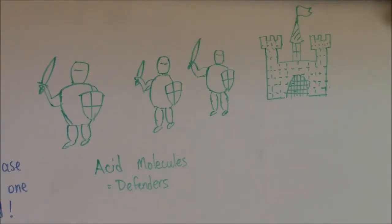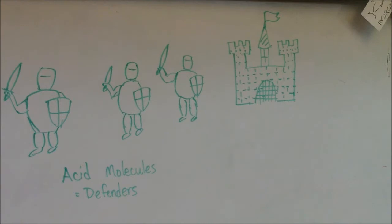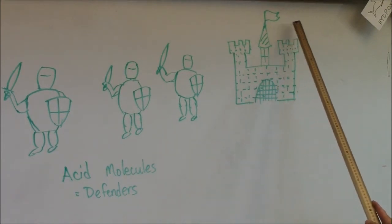A titration can be thought of as a battle. In this case, we'll imagine that there is a castle being defended by acid molecules. The castle is flying a white flag. This will represent the color of the phenolphthalein. As long as at least one acid still stands, this flag will be white.